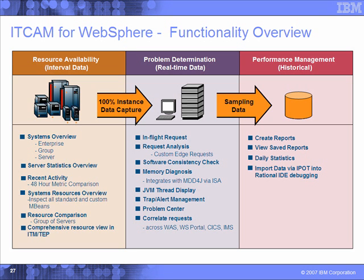We also can do memory diagnosis with the typical JVM heap stats. We also have a trap alert management problem center. You set an alert and, say, a resource, a transaction, or an application violates this policy — it will automatically set a trap to turn on level 3 diagnostics so that you can capture all that data, recreate the problem, fix it, and incorporate that into your production environment before your client experiences the problem. We also capture historical data, sampling it to create reports and do trending analysis.